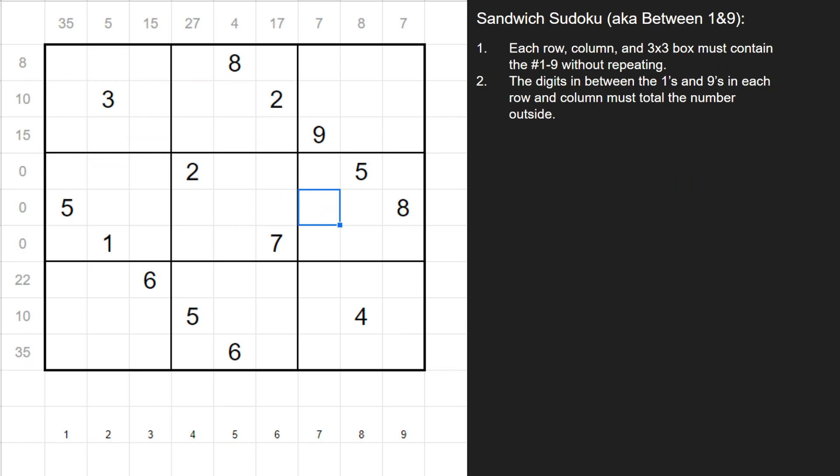In regular sudoku, you have to have at least 17 digits prefilled in order to solve the puzzle. In this variant, you typically start off with less numbers prefilled because you have other types of clues. So in this example, you'll see only 14 digits were given at the start. So what I'm going to do is start to solve this puzzle. I won't solve the whole thing for the sake of time, but just go over my method and how I go about them, just so you can see how it starts to unravel.